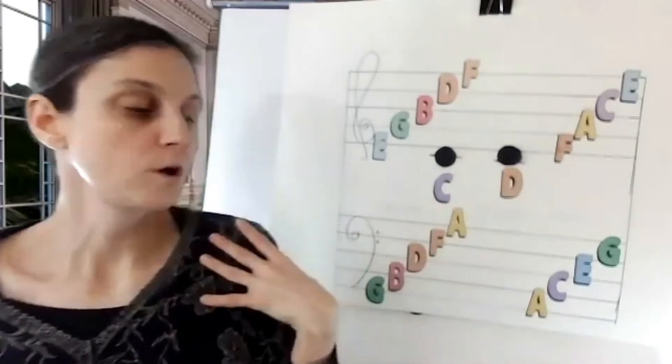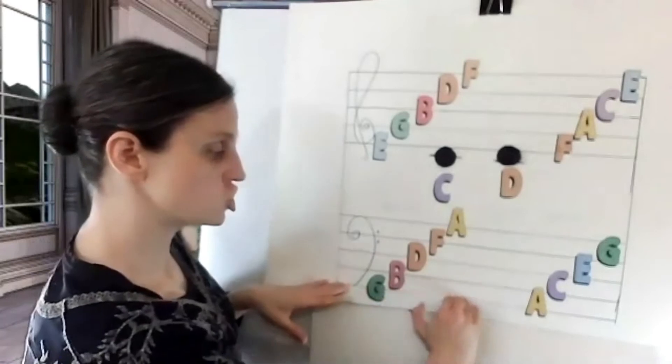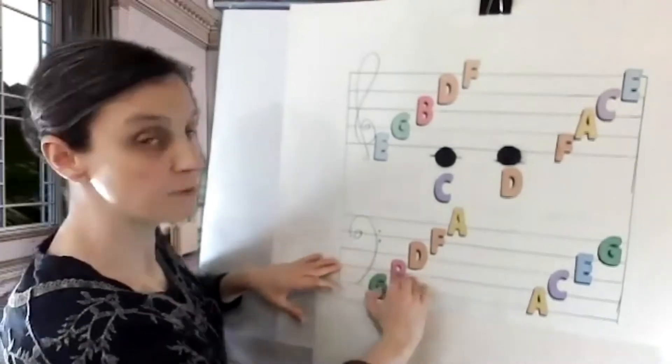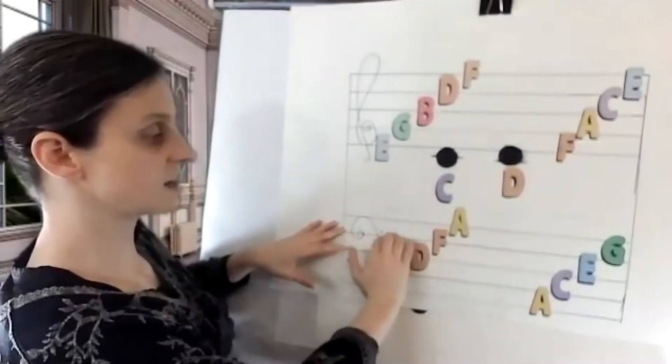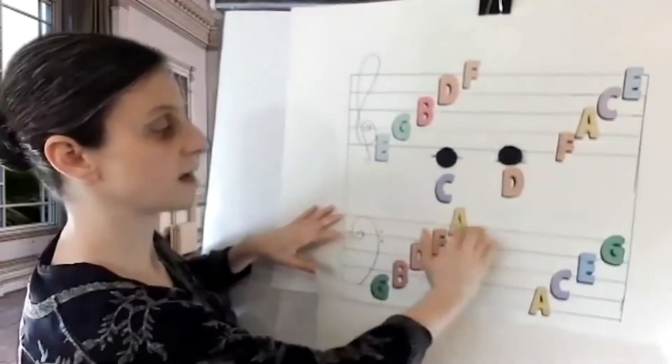So we've got this bottom line right here, G. The next line up is B. The middle line is D. The next line up is F, and the top line is A.